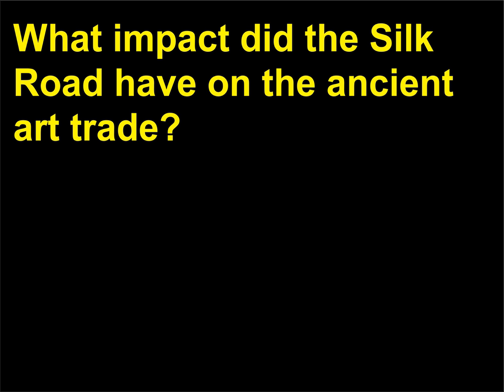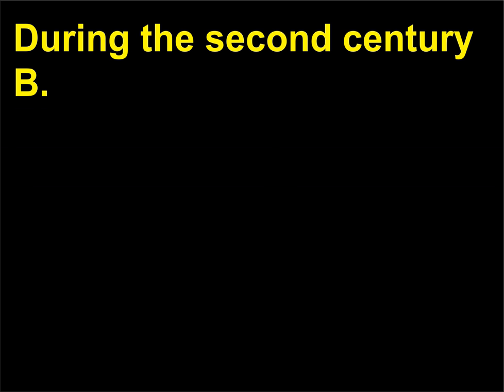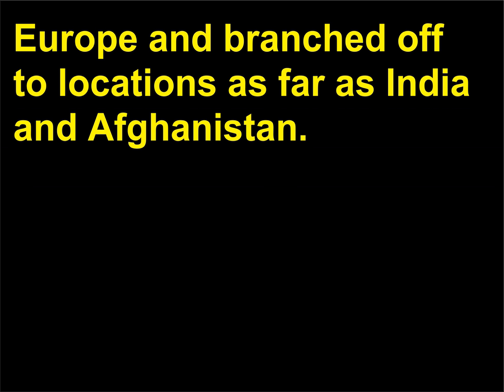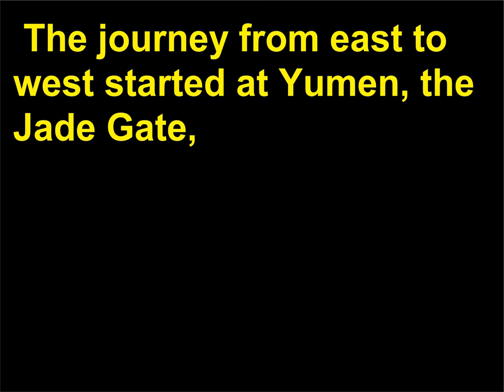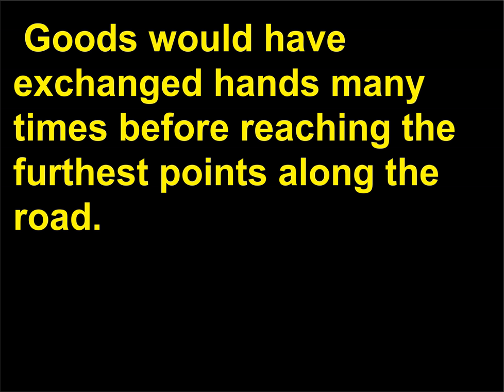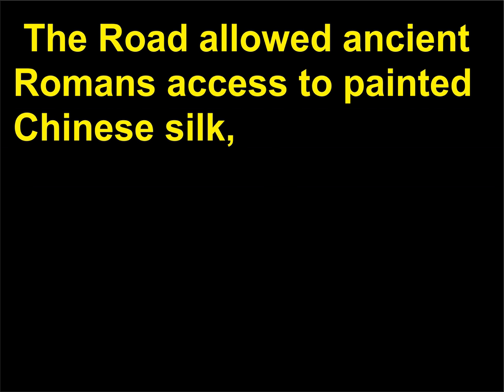What impact did the Silk Road have on the ancient art trade? During the 2nd century BCE, the Silk Road was the longest road on Earth, at over 5,000 miles. It connected the Chinese city of Luoyang with the city of Rome in western Europe, and branched off to locations as far as India and Afghanistan. The journey from east to west started at Yumen, the Jade Gate, located at the western end of the Great Wall of China. Goods would have exchanged hands many times before reaching the furthest points along the road. The road allowed ancient Romans access to painted Chinese silk and other luxury items such as ivory, gold, gems, and spices.